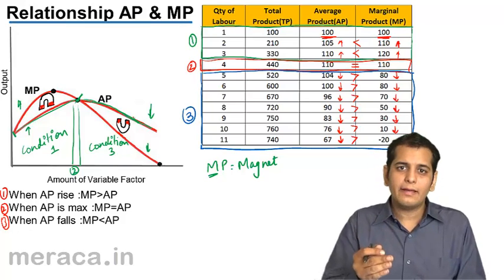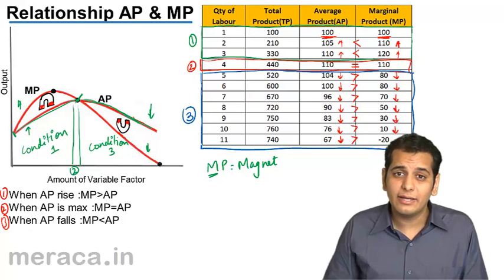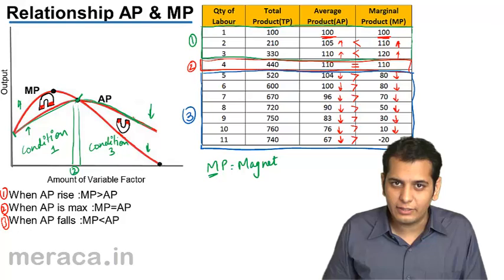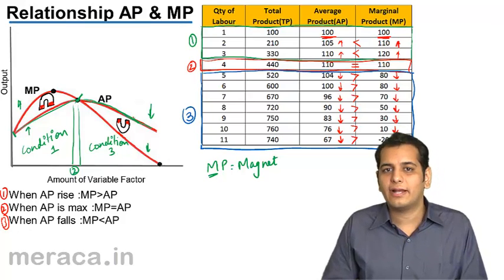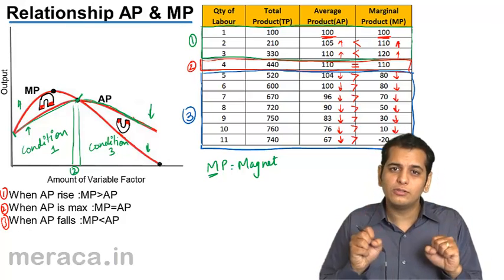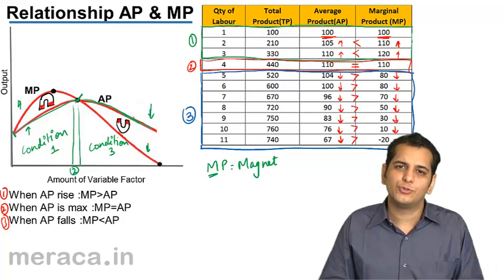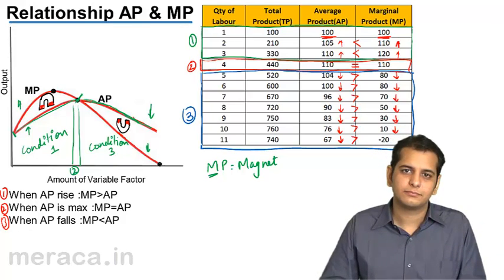After a point both meet and after that point, MP goes below AP. Again, it acts as a magnet. Since it is falling, it also attracts AP. It also pulls AP towards itself. And thus, AP also starts falling. So this is a great idea. Thank you for listening. Thank you.